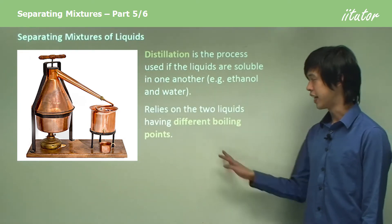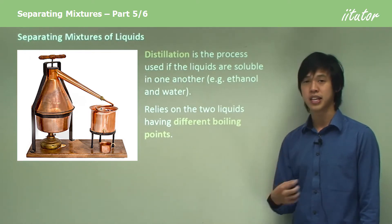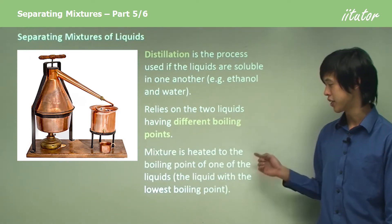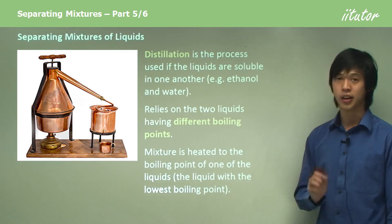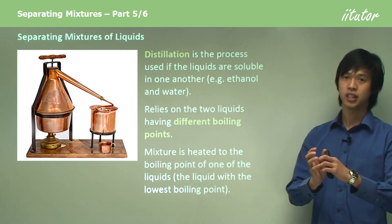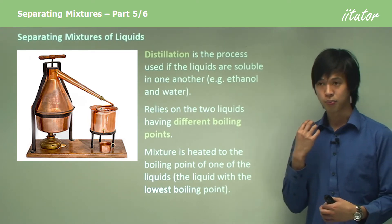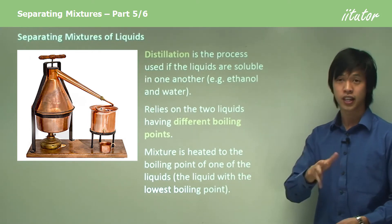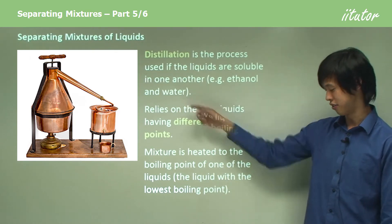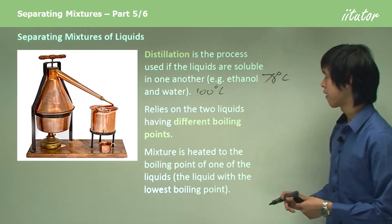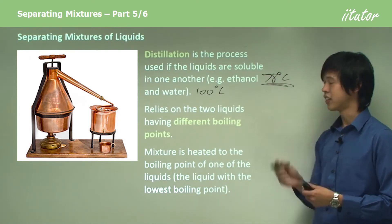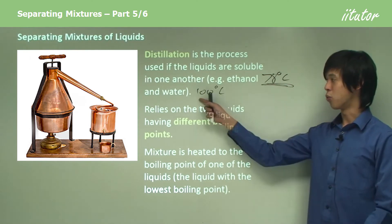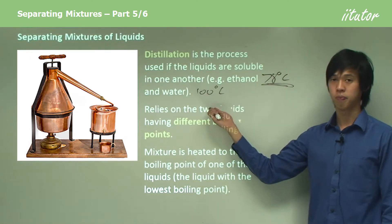Similar to the evaporation concept, distillation relies on the two liquids having different boiling points, so one boils faster than the other. We heat the mixture to the boiling point of the liquid with the lowest boiling point. The boiling point of ethanol is about 78 degrees Celsius, while water is 100 degrees. We heat the liquid up to 78 degrees and the ethanol starts to boil and leaves as a gas.